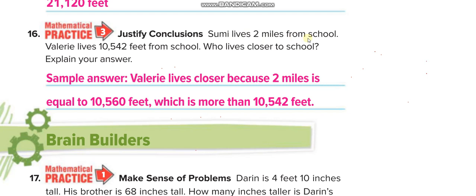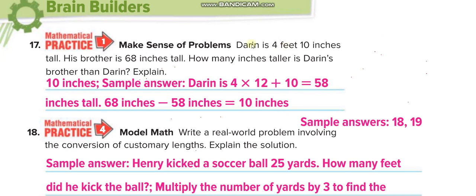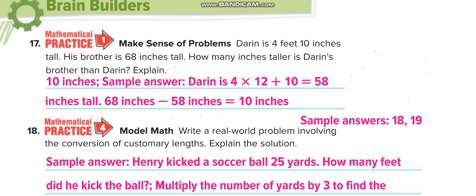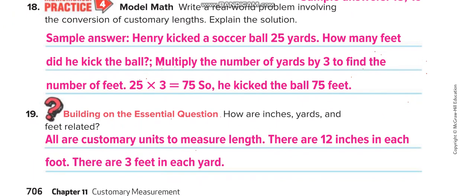Sumi lives 2 miles from school: 2 times 5,280 equals 10,560 feet, which is more than 10,542 feet, so Valeria lives closer. Next: 4 feet and 10 inches equals 4 times 12 plus 10, which is 58 inches. Darren is 58 inches tall but his brother is 68 inches, so his brother is 68 minus 58 equals 10 inches taller.